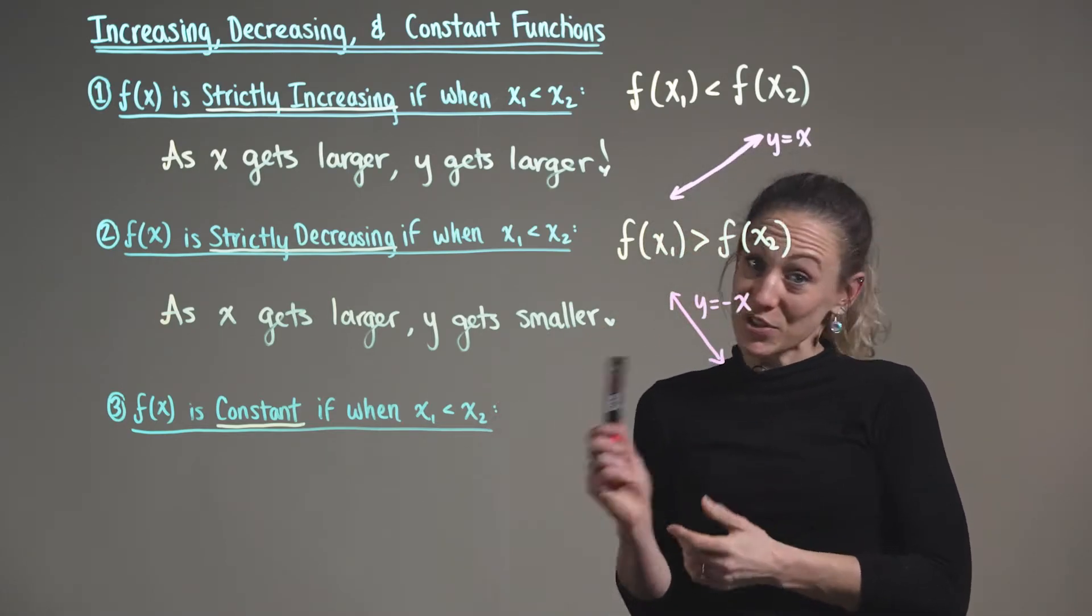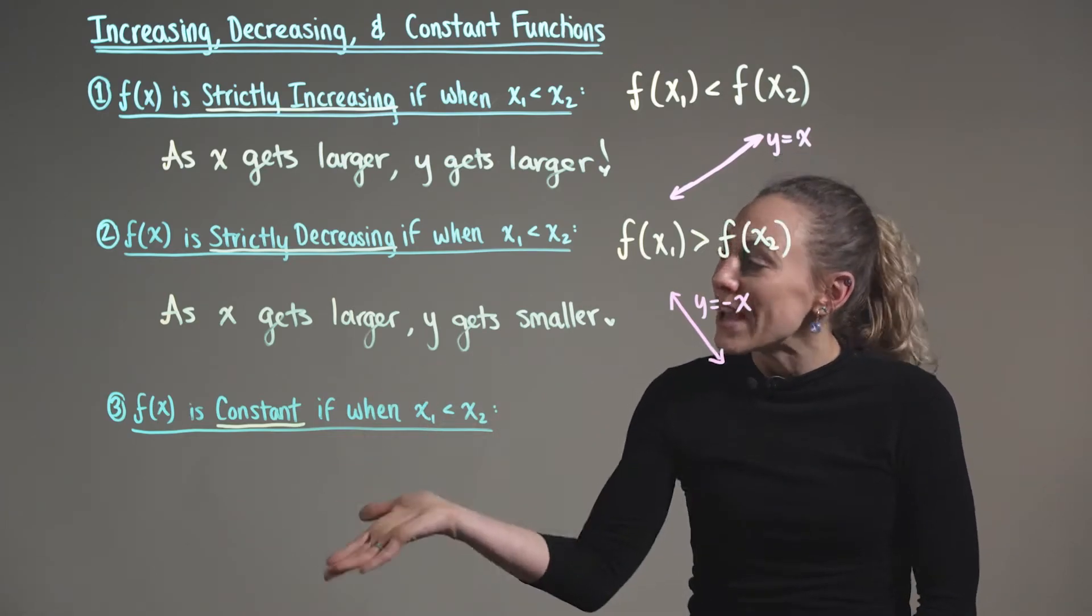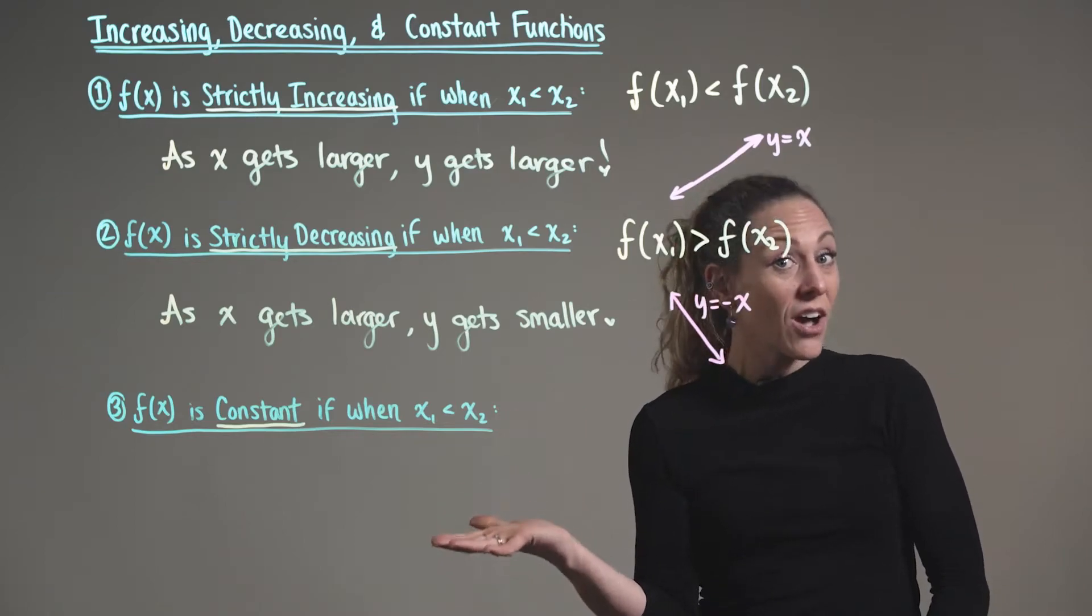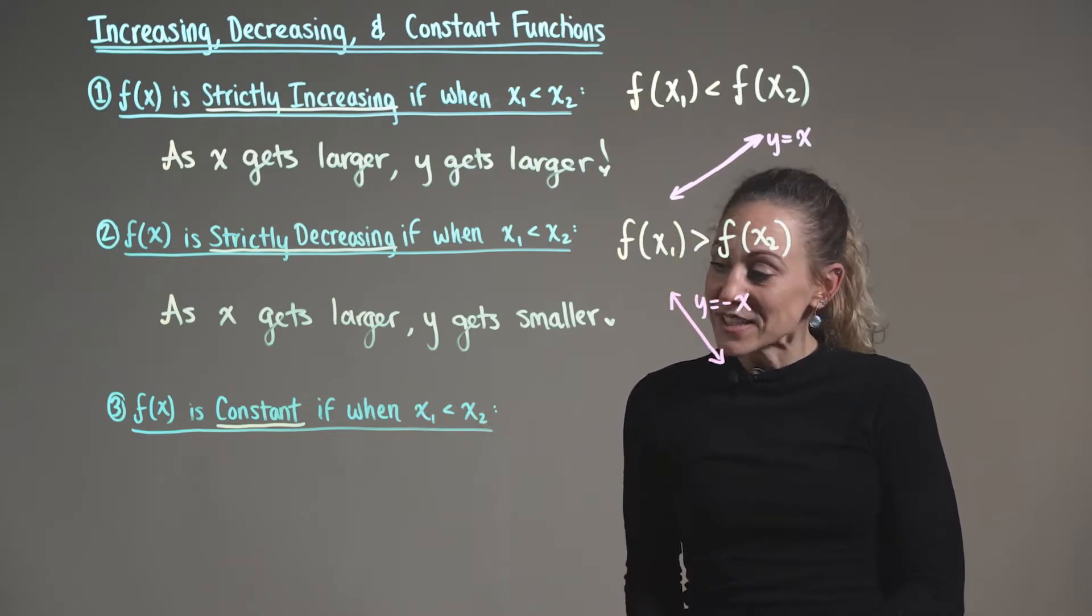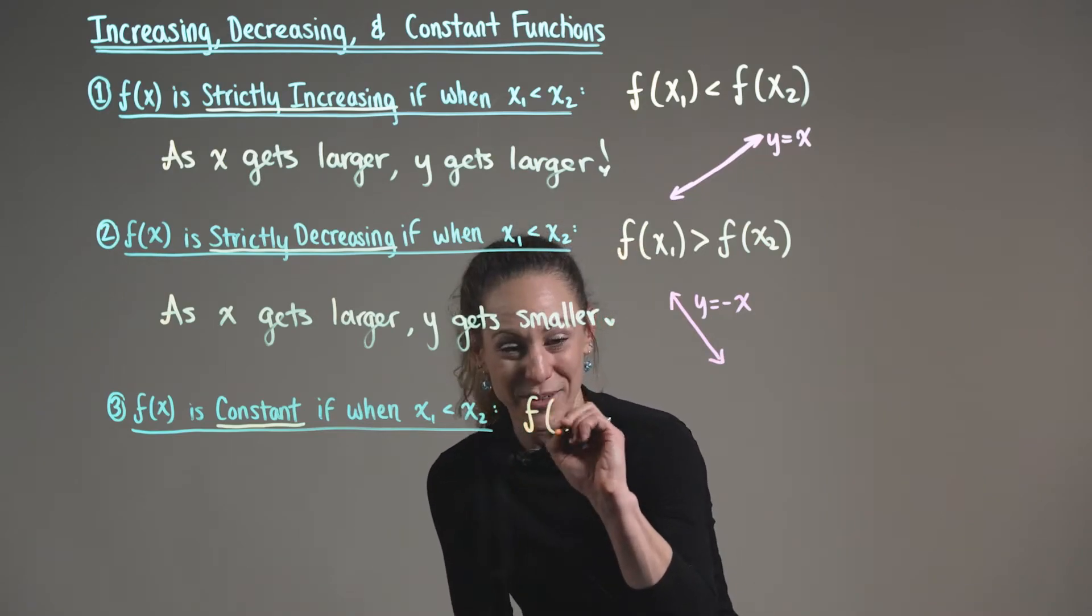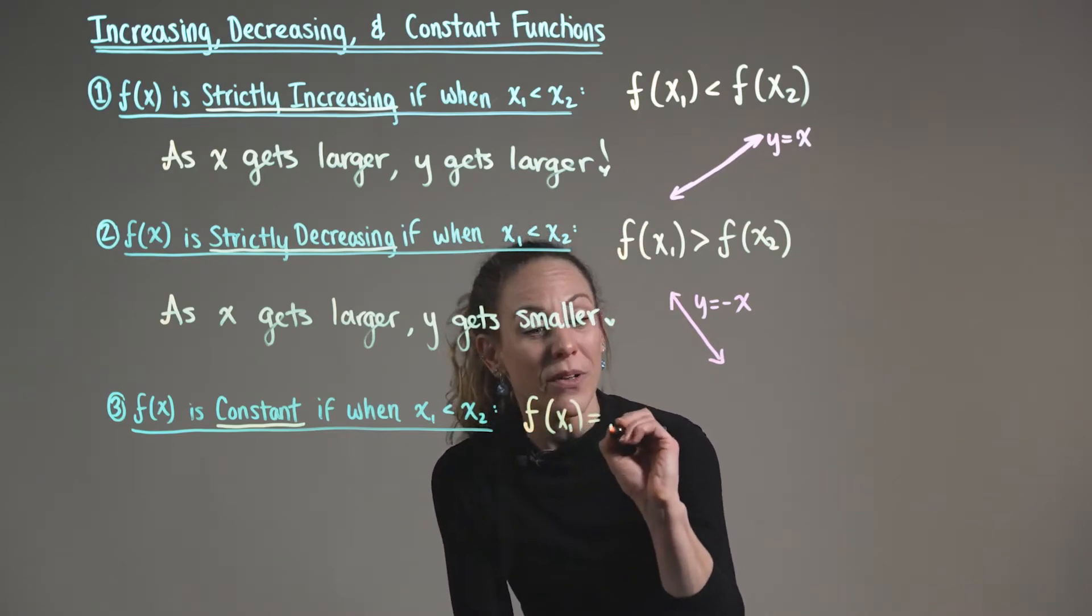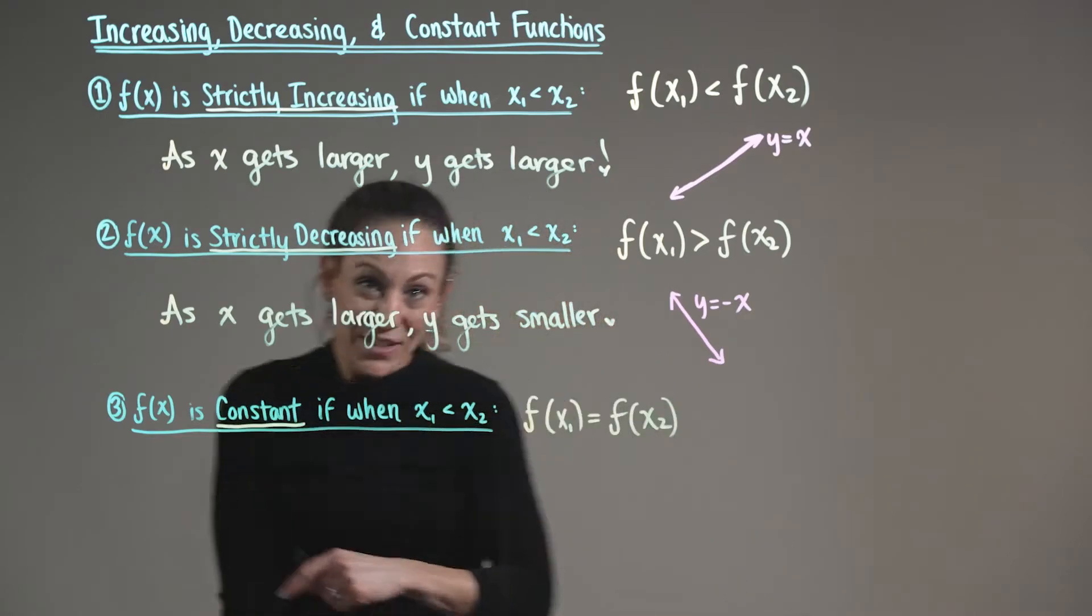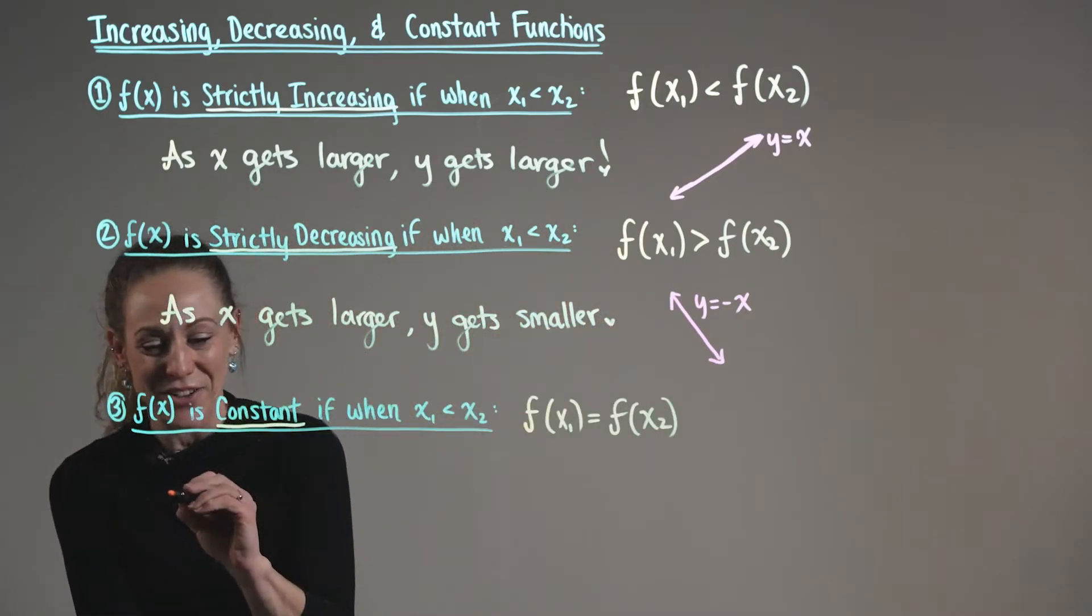And last but certainly not least, we have case three, and we say that a function f of x is considered constant if when x sub one is less than x sub two, then f of x sub one is equal to f of x sub two. So again, breaking this down into easy to understand terms.